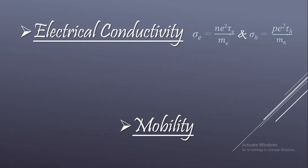In the case of semiconductors, both electrons as well as holes are acting as carriers. For a strictly n-type semiconductor we have derived the electrical conductivity expression as sigma_e = n·e²·τe / me*. And for a p-type semiconductor the electrical conductivity will similarly be sigma_h = p·e²·τh / mh*.